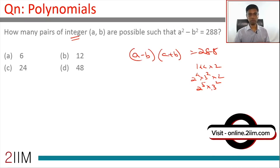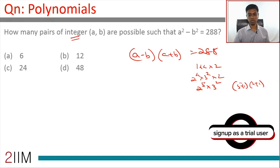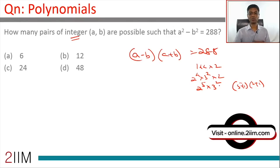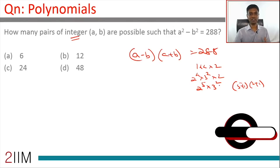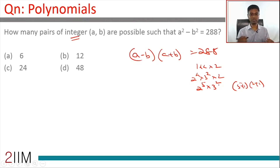How do we know there are 18 factors? It's (5+1)(2+1) = 18. For any number, if you know the prime factorization, you can find how many factors it has using that formula. If you don't know it, revisit and learn it. Once you know there are 18 factors, they can be paired up in nine ways.